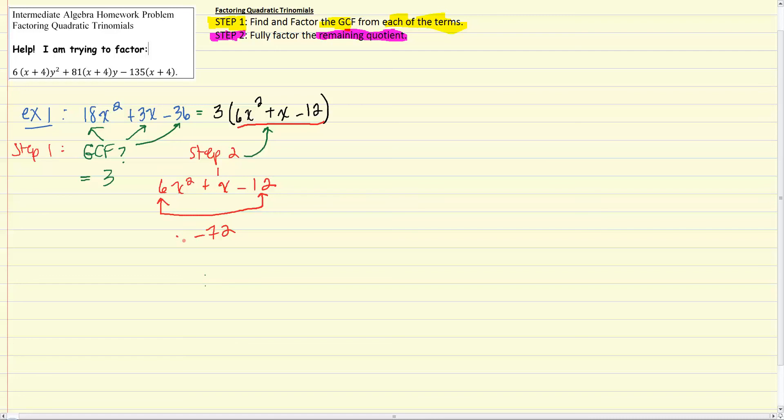So we look for factors of 72 that add to 1. We'd hunt down the factors, just like we would in the case of the monic quadratics, and we'd find that those factors are going to be 9 and 8. Because they need to add together to give you positive 1, the 9 needs to be positive and the 8 needs to be negative. So 9 times negative 8 is negative 72, and 9 plus negative 8 is going to be 1.